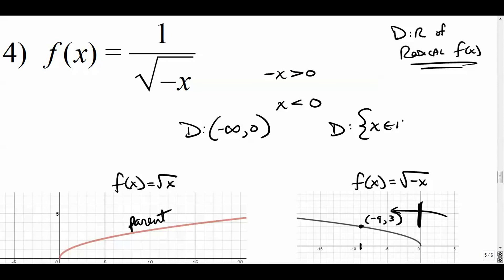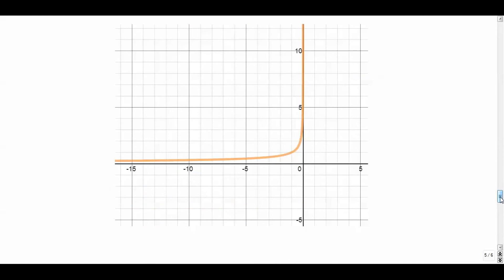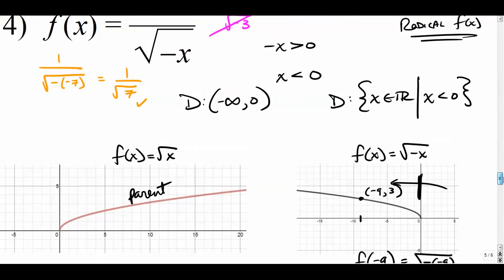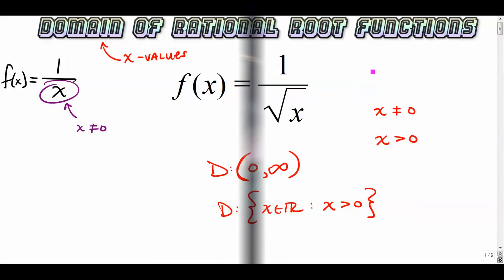In set builder notation: all real numbers such that x is negative. You can check — plug in negative seven and you get one over the square root of seven, which is fine. If you plug in a positive number like three, you get one over the square root of negative three, which can't exist in the real system. So it's every negative x value. That wraps this up — four examples on how to determine the domain of functions with square roots, cube roots, or any radical in the denominator. I hope this helped, and be sure to subscribe so you don't miss any videos!